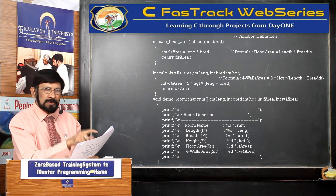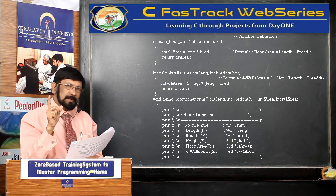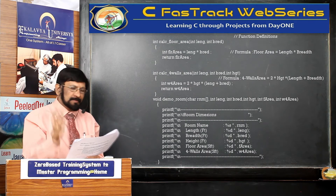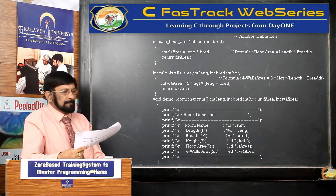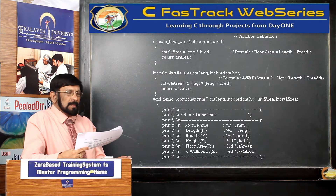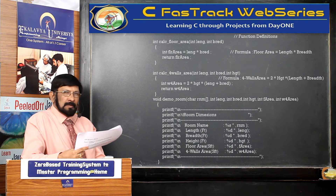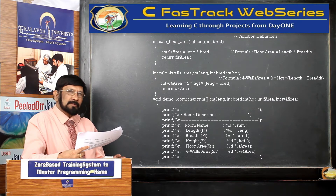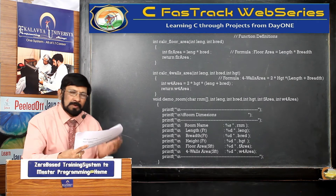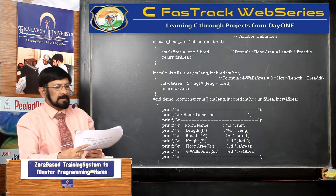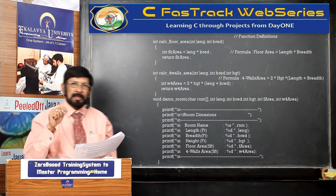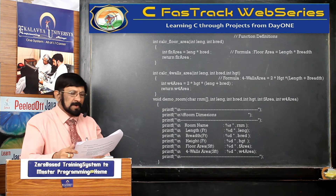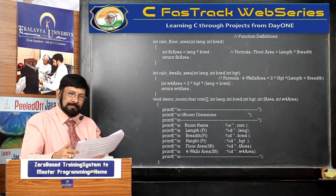Within the body of the function, what have you written? One local variable we have defined: int floor_area = length * breadth. What is the formula? Floor area is equal to length into breadth. Thereafter we are writing a return statement: return floor_area.